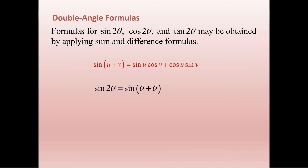We can write sine 2 theta as just theta plus theta. In this case, u and v are both theta, so we wind up with sine theta cosine theta plus cosine theta sine theta. But these are the same thing — they're both sine theta cosine theta — so you get 2 sine theta cosine theta. You don't have to memorize a special formula; you can derive it from the sum and difference formulas.